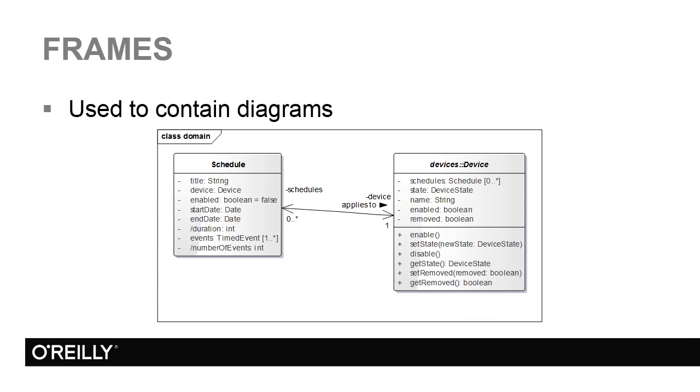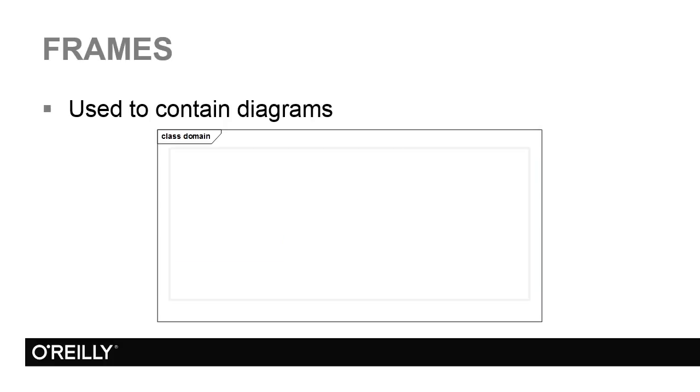Frames are used to contain diagrams. Here's a UML class diagram in Enterprise Architect. The frame is the box around it with a label at the top left. The label has the type of diagram in it, sometimes as an abbreviation, and the name of the diagram. Often if you copy and paste diagrams from a modelling tool into Word or PowerPoint or if you generate documentation, all the diagrams will be put in frames. It may be an option that you can control in your modelling tool.